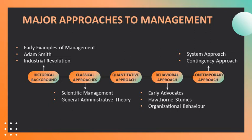Frank and Lillian Gilbreth focused on increasing work productivity through reduction of wasted motions. They invented a device called a Microchronometer that recorded a worker's hand and body motions and the amount of time spent during each motion. Management used scientific management in contemporary words to increase productivity and to design incentive systems based on output of best qualified employees.